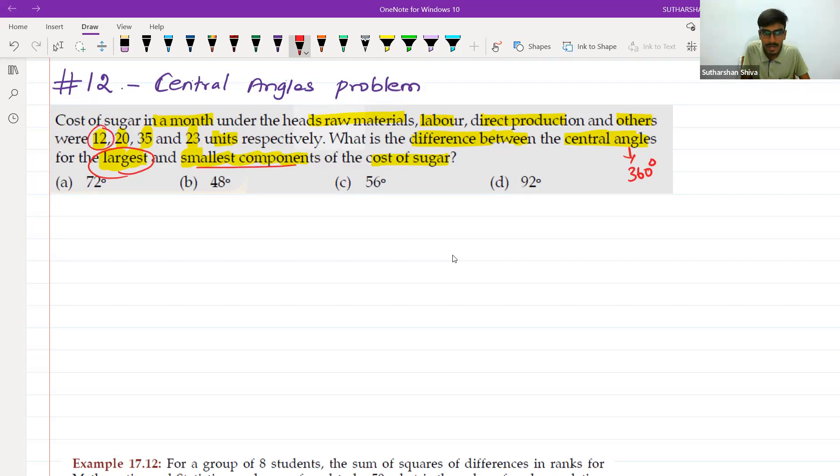Once it is done, take a calculator and add all these units. 12 plus 20 plus 35 plus 23. Once it is done, your total is going to be 90.